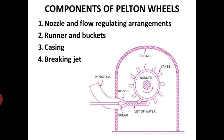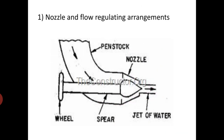The Pelton wheel is named after Lester Pelton, an American engineer, and is suitable for high head and low discharge. The main components are: nozzle and flow regulating arrangements, runner and buckets, casing, and braking jet. We will discuss each one by one.